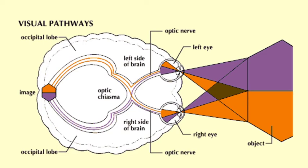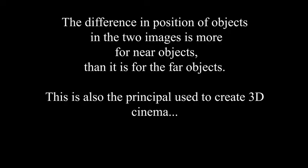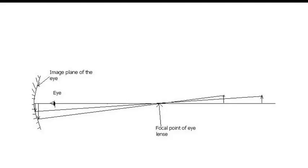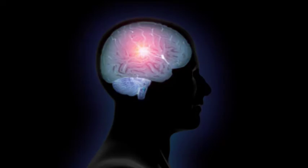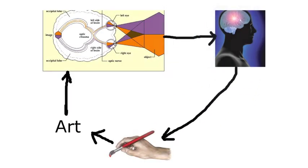Our eyes contain lenses through which light from the object falls at the retina. One image is formed per eye at a slightly different angle. In each single image, the closer objects form a bigger image compared to the farther objects. Our brain can analyze the relationship of two objects' angles and sizes within a space to create a 3D world as we see it. Consequently, the brain commands our hands to draw what it sees rather than what the eye sees.